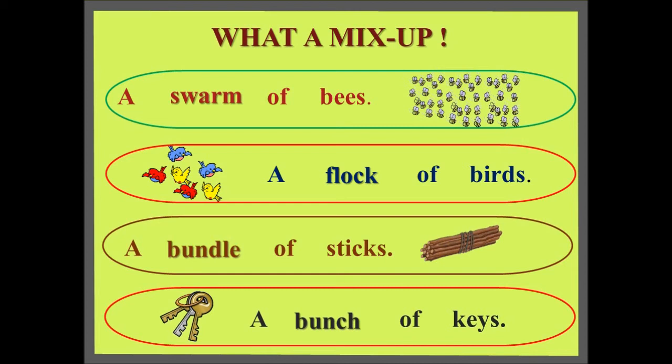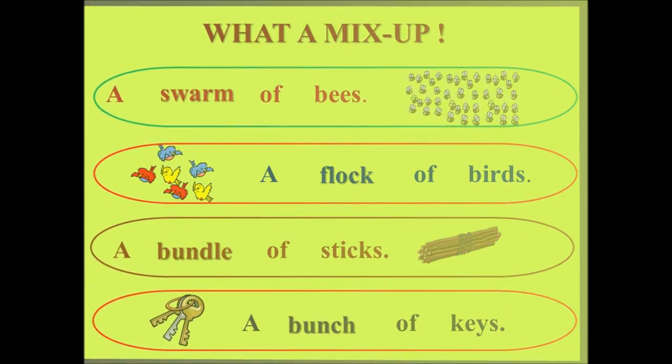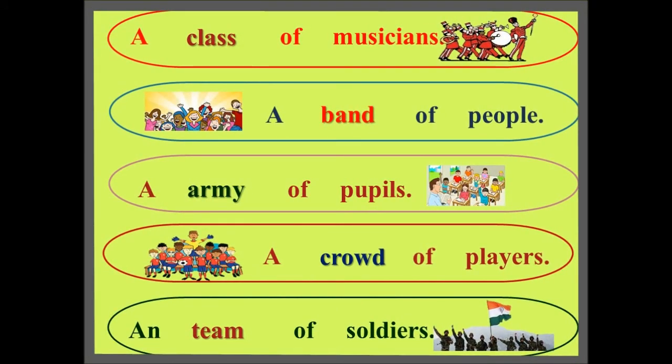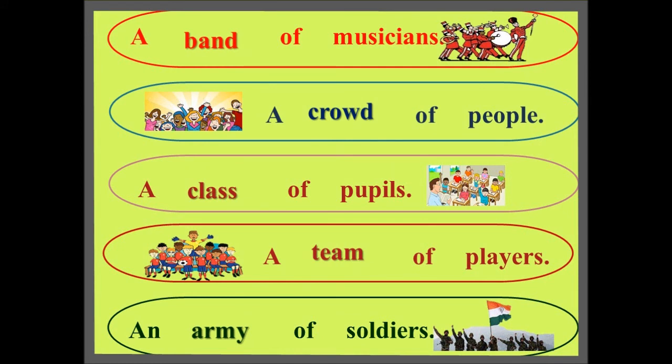Let's read the next mix up: A class of musicians, a band of people, an army of pupils, a crowd of players, and a team of soldiers — there is definitely something wrong here. Let's correct it. The correct answers are: a band of musicians, a crowd of people, a class of pupils, a team of players, and an army of soldiers. Did you get it right? Very good!